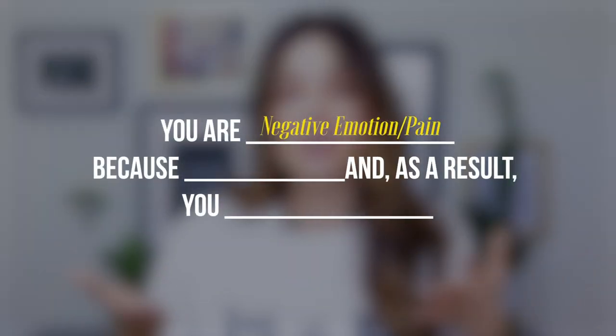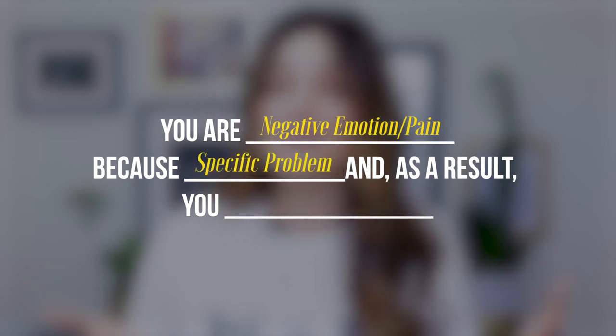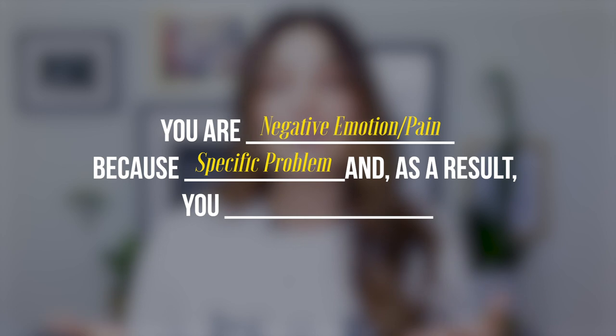The loop goes: 'You are [negative emotion/experience or pain] because [specific problem]. And as a result, you [negative emotion/experience or pain].' Using the weight loss example: 'You are feeling anxious because your clothes no longer fit. And as a result, you're embarrassed to go out with your friends.' Then you continue: 'You are embarrassed to go out with friends because you don't want to feel judged by your weight gain. And as a result, you feel lonely. You feel lonely because your skinny friends just won't understand what you're going through. And as a result, you feel frustrated. You feel frustrated because you've tried so many different diets and none of them seem to work. And as a result, you feel helpless.'